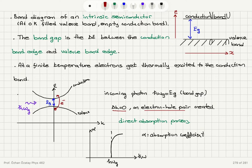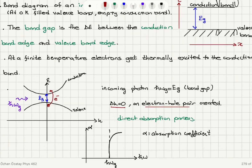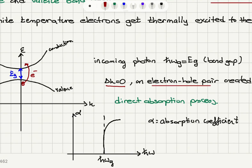In a direct absorption process, if you look at the absorption coefficient, we see a marked increase in the absorption coefficient as we reach an energy equal to the band gap energy.